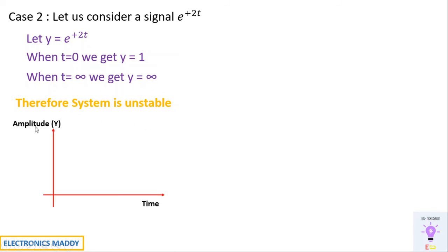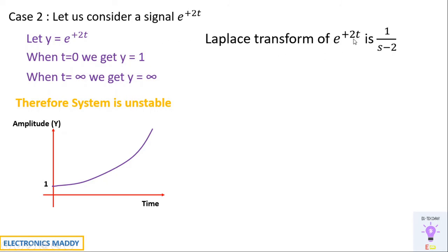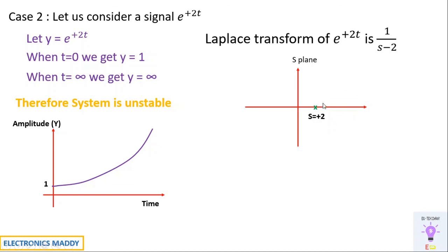If we plot y = e^(+2t), the amplitude starts at 1 at t=0 and increases exponentially toward infinity. Applying the Laplace transform gives 1/(s-2). To locate the pole, we set s-2=0, giving s = +2, which lies in the right half of the s-plane. Since the system is already defined as unstable, and the pole is located in the right half of the s-plane, we conclude that poles in the right half of the s-plane are always unstable. This is the reason why poles in the right half of the s-plane indicate instability.